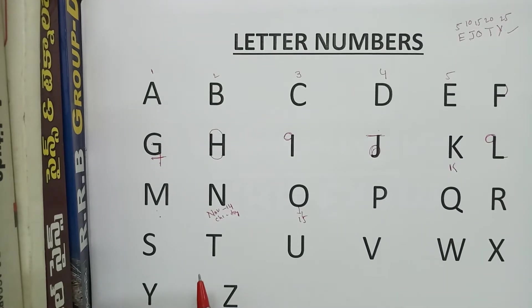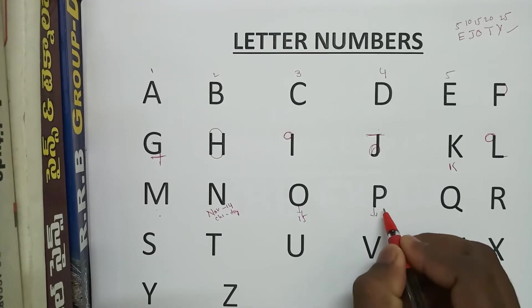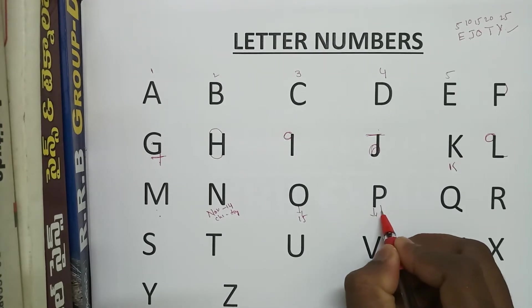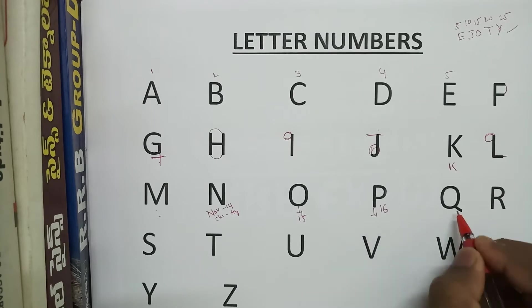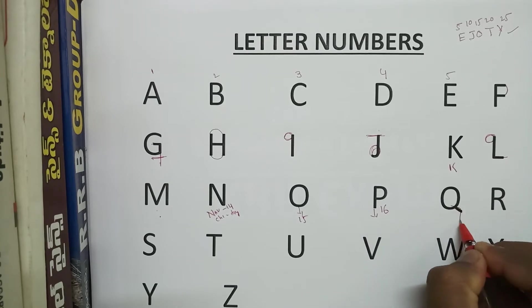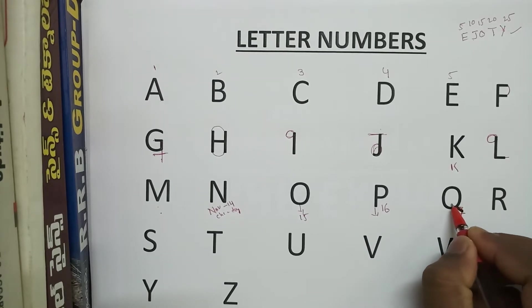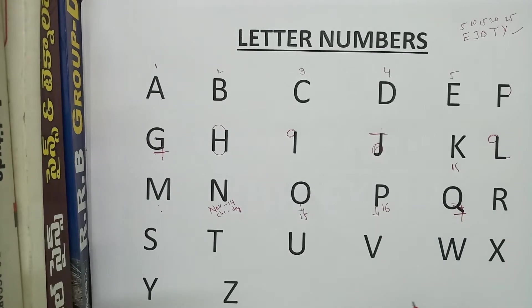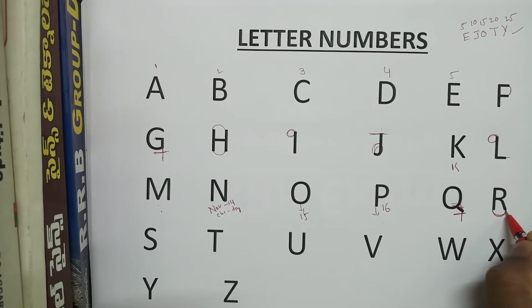P code is 16. Q code is 17. Letters and their numbers — just remember them. R code is 18.